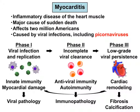Viral myocarditis can be divided into three phases. In Phase I, heart damage is caused by viral replication. In Phase II, antiviral and autoimmune responses damage the heart. In Phase III, cardiac remodeling such as fibrosis and calcification occurs.